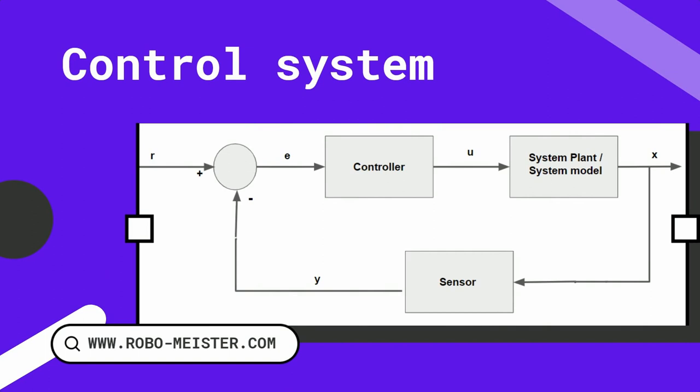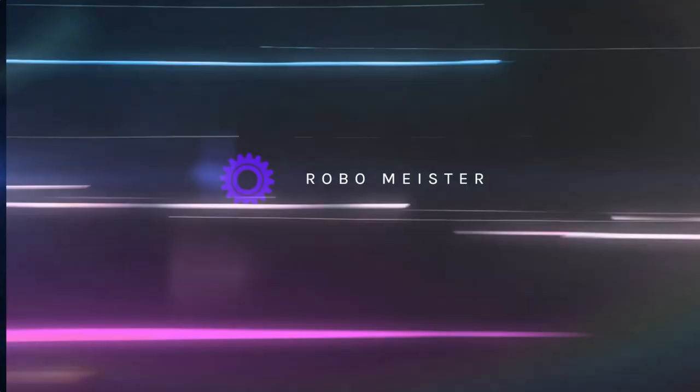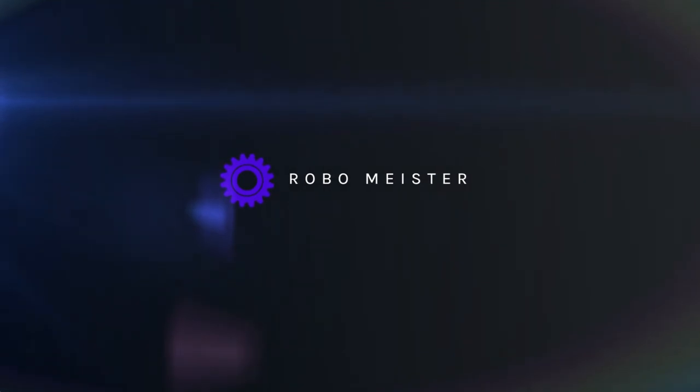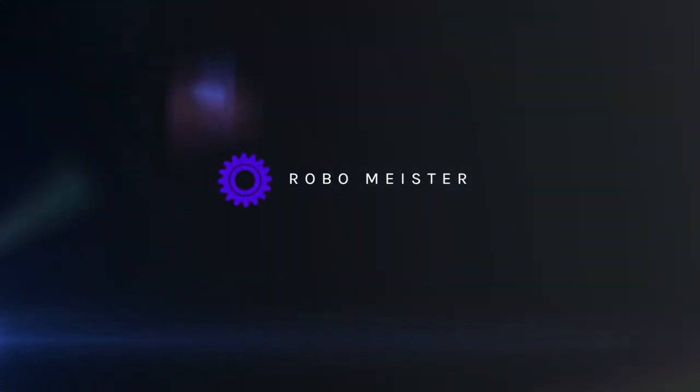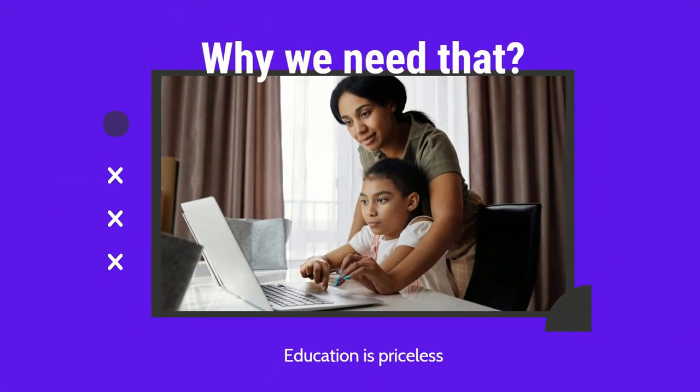Hi all, today we will discuss what an automatic control system is. Automation uses various control systems to perform tasks with minimal human intervention. For example, many machines are automated in an office environment.